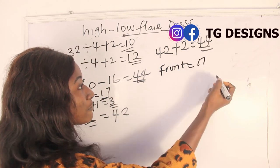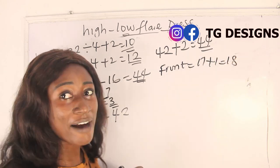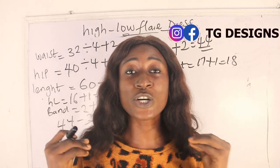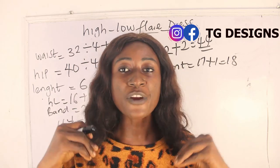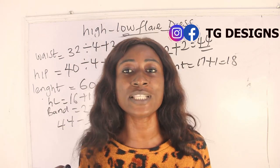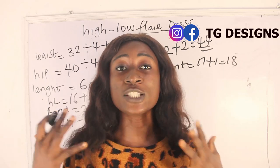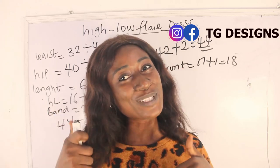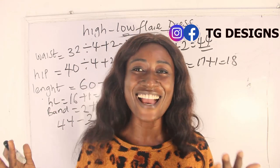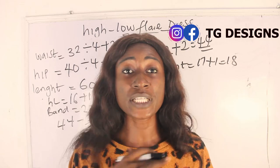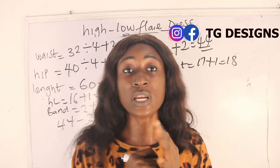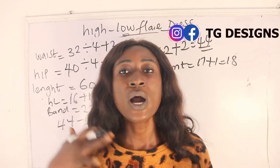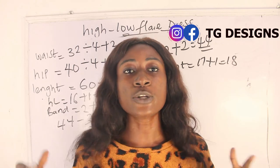My front block is 17 plus one inch sewing allowance, giving 18 inches. If you have any questions during this tutorial, feel free to drop them in the comment section. Don't forget to like, share, and subscribe. We have trainings available — both online and physical — and all details are in the description box below.